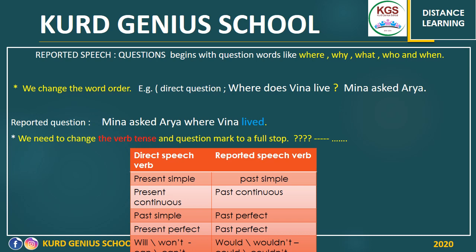Remove 'does' and bring the subject 'Vena,' then change the verb tense of 'live' to 'lived.' So: 'Mina asked Aria where Vena lived.' Why do we change 'live' to 'lived'? Because we have present simple — you have to remember we change the verb tense from present simple to past simple. Look at the table: present simple to past simple, present continuous to past continuous, past simple to past perfect, present perfect to past perfect. Also, we remove the question mark and change it to a full stop.